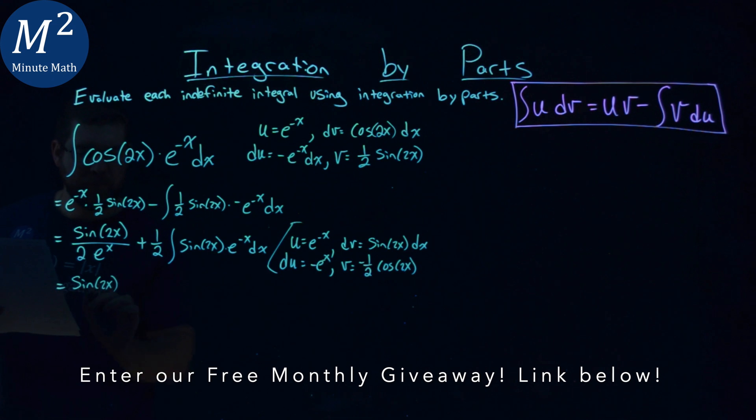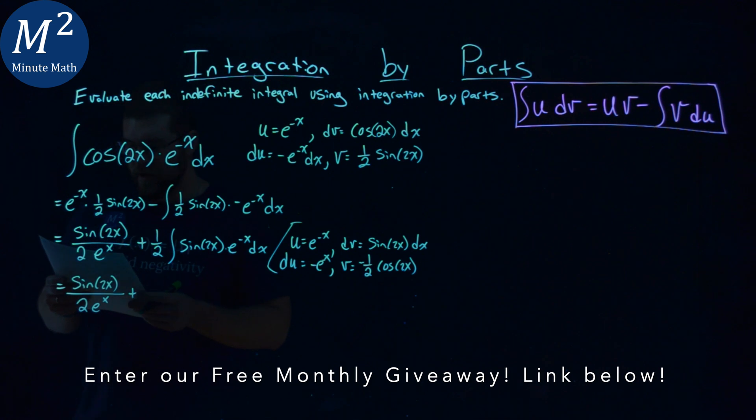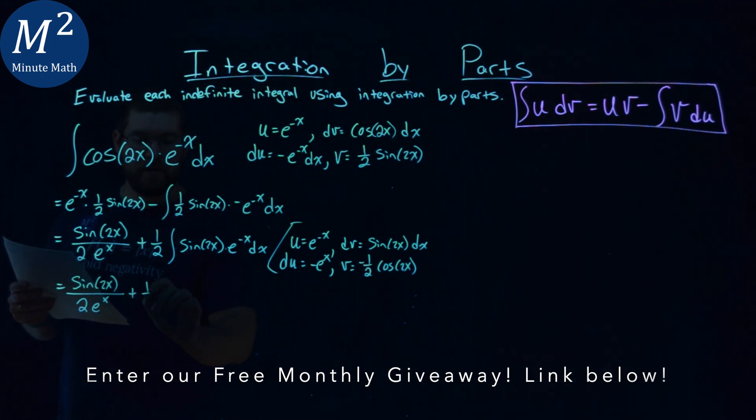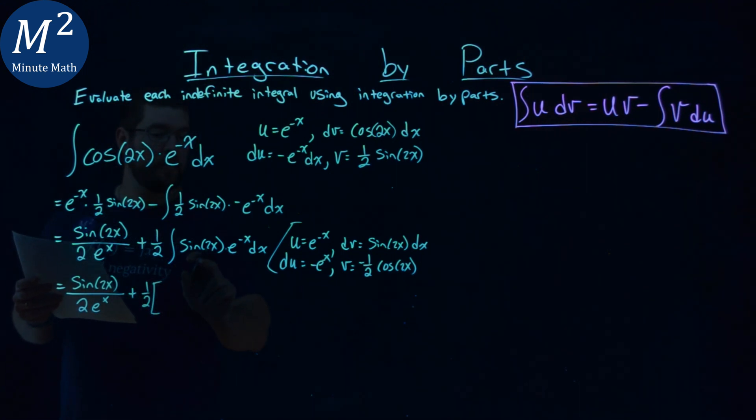Sine of 2x here over 2e to the x power. Plus. The one-half stays out here. And we're going to do our integration by parts here, and I'll put it in brackets.